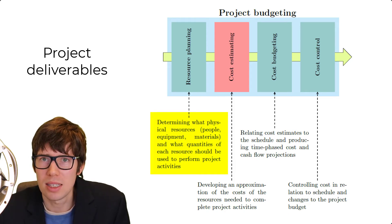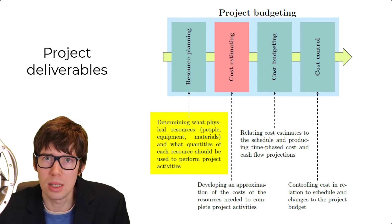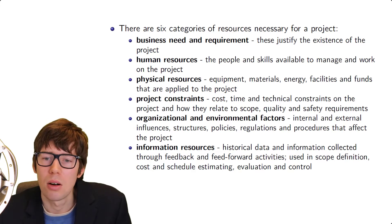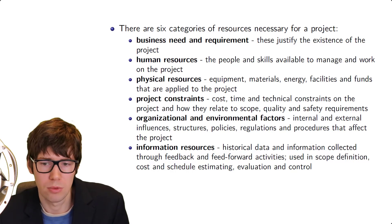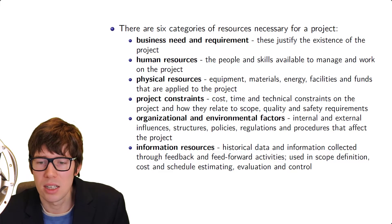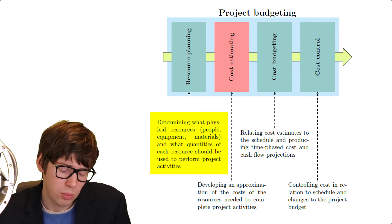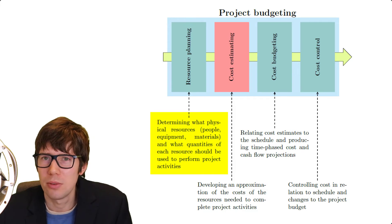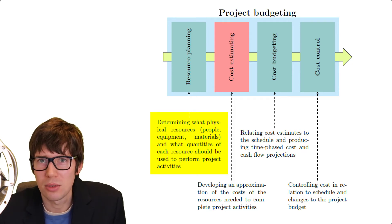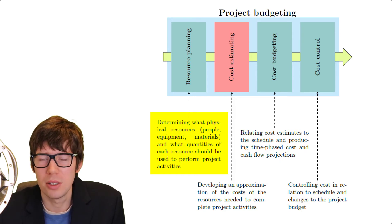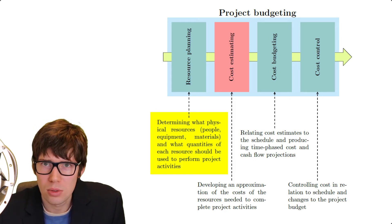The purpose of resource planning is twofold: first, we need to come up with a list of different resources we're going to need for our particular project to deliver the project deliverables; and second, we need to estimate what quantity of each of those resources we're going to need. According to Gardner, there are six fundamental categories of resources: business need and requirement, human resources, physical resources, project constraints, organizational and environmental factors, and information resources. These categories need to be mutually exclusive and collectively exhaustive.